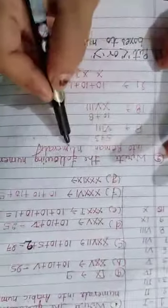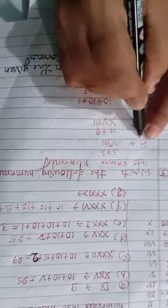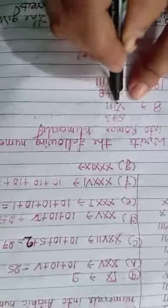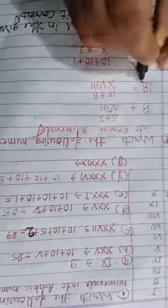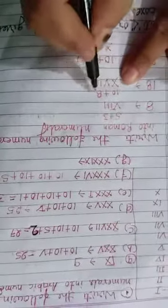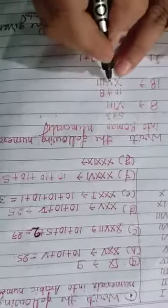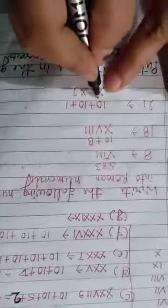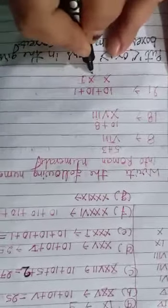Question 2: Write the following numerals in Roman numerals. For 8: 5 plus 3 — write 5 as V and 3 as triple I, so 8 is VIII. For 18: 10 plus 8 — write 10 as X and 8 as VIII, so 18 is XVIII. For 21: 10 plus 10 plus 1, so 21 is XXI.